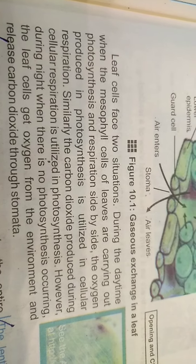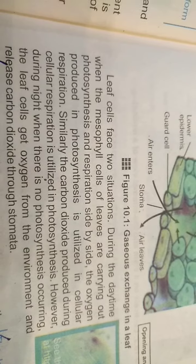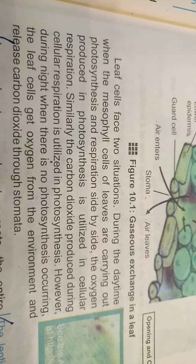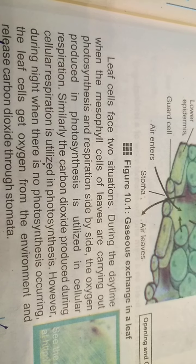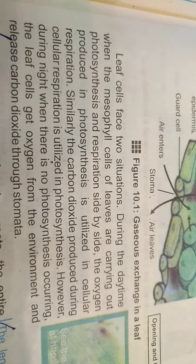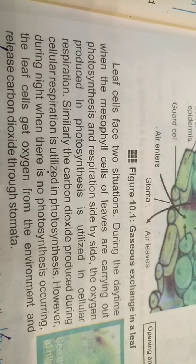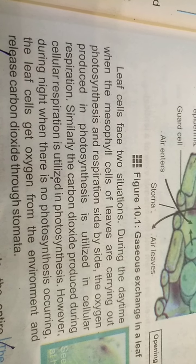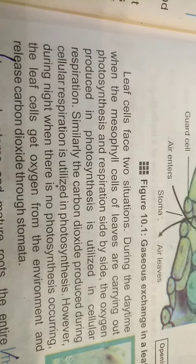Leaf cells face two situations. During the daytime, when mesophyll cells carry out photosynthesis and respiration side by side, the oxygen produced in photosynthesis is utilized in cellular respiration; similarly, the carbon dioxide produced during cellular respiration is utilized in photosynthesis. However, during nighttime when there is no photosynthesis, leaf cells get oxygen from the environment and release carbon dioxide through stomata.